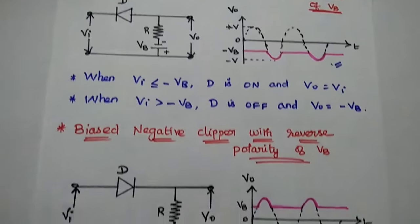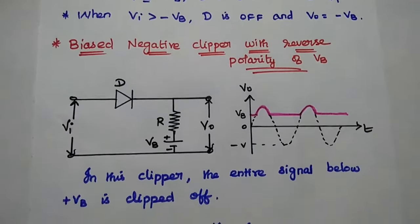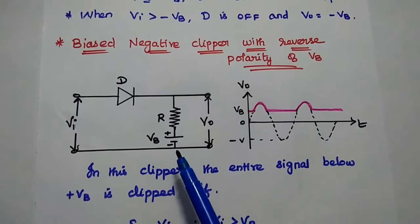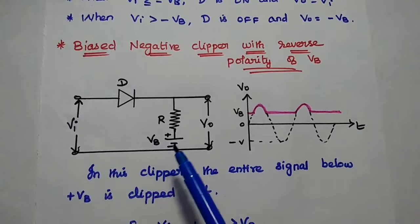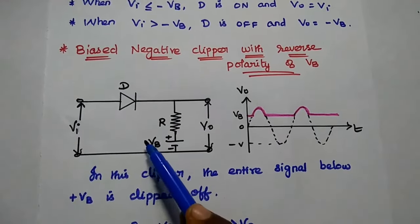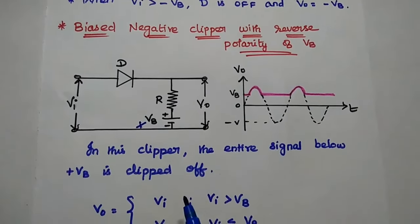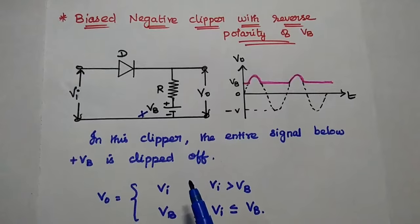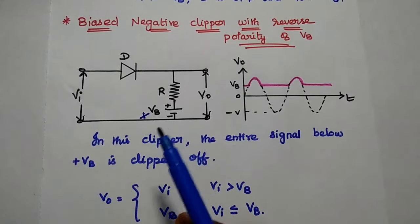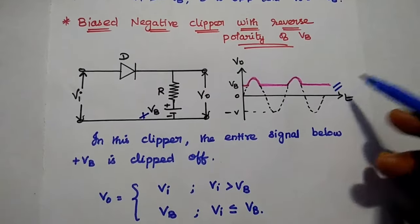Next is the biased negative clipper with reverse polarity of the biasing voltage. For the standard biased negative clipper, we give a negative biasing voltage, but here we reverse the polarities and give a positive biasing voltage. In this case, the entire signal below the positive biasing voltage is clipped off, and we get the output only above that level.